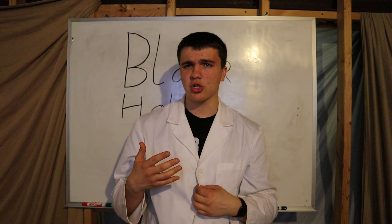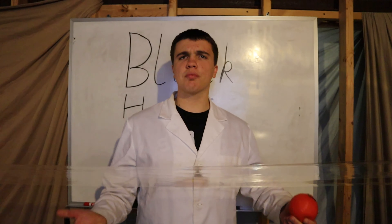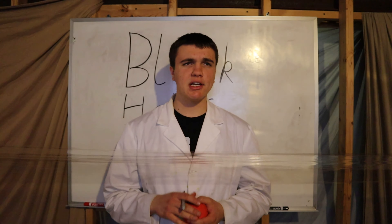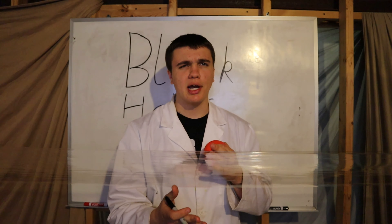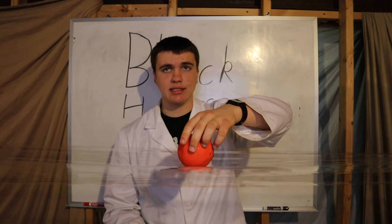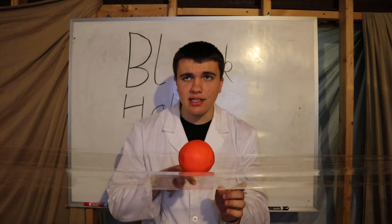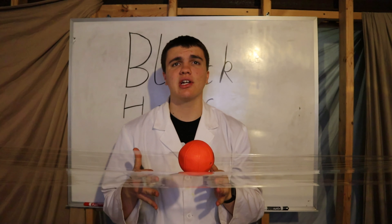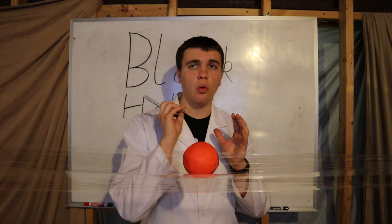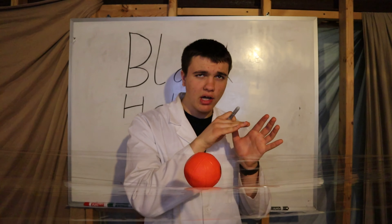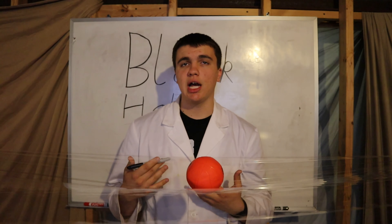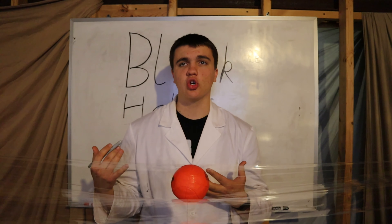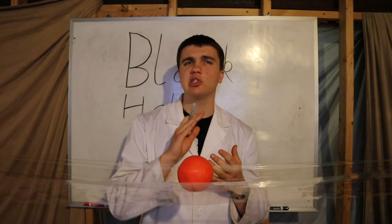To better understand this concept of no return, I have a model to show you. You're probably wondering why I have this plastic here — that's because you can think of this as the fabric of space. Space is three-dimensional, but the effect gravity has on it can be represented in two dimensions. If you place a heavy object on this plastic, you can see a little indent. This is the effect gravity has on space, and it's also why objects thrown horizontally on a planet curve downward — they're following the curved shape of space. This shape is also referred to as a gravity well.